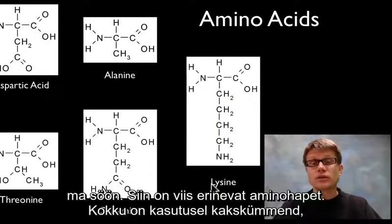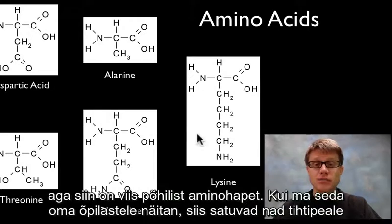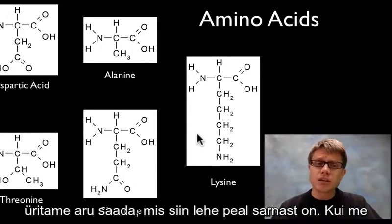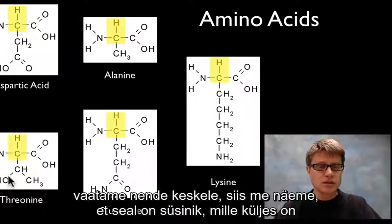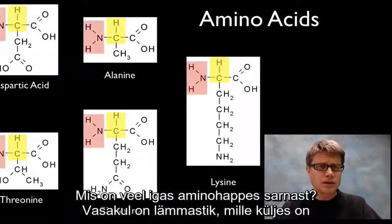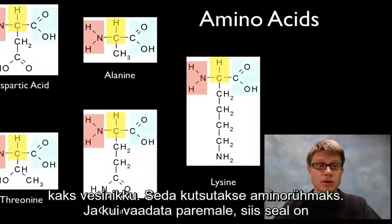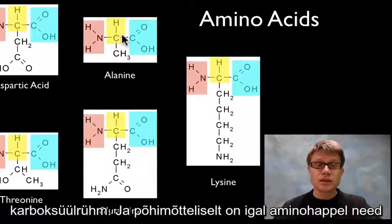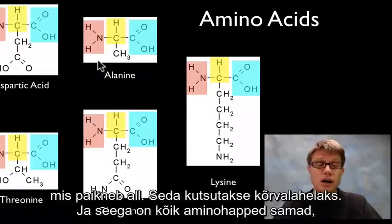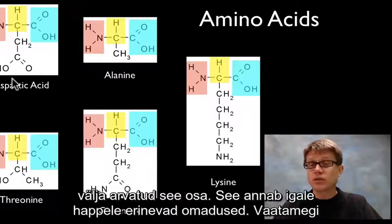Here are five different amino acids — there are a total of 20 that we use in life. When I show this to my students they tend to get overwhelmed because there's too much chemistry on one page. But if we look at the middle of each, we find a carbon with a hydrogen attached — we call this the alpha carbon. On the left side we have nitrogen attached to two hydrogens, called the amino group. On the right side we have what's called a carboxyl group. Every amino acid has these three similar parts, and the only thing that differs is what comes off the bottom — we call that the R group — which gives it different properties.